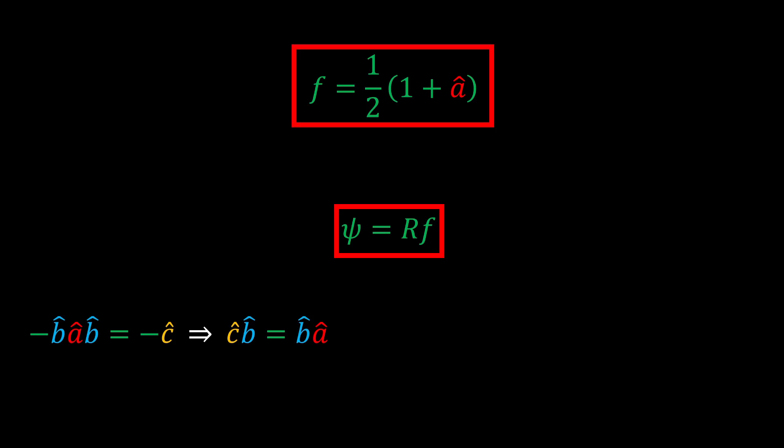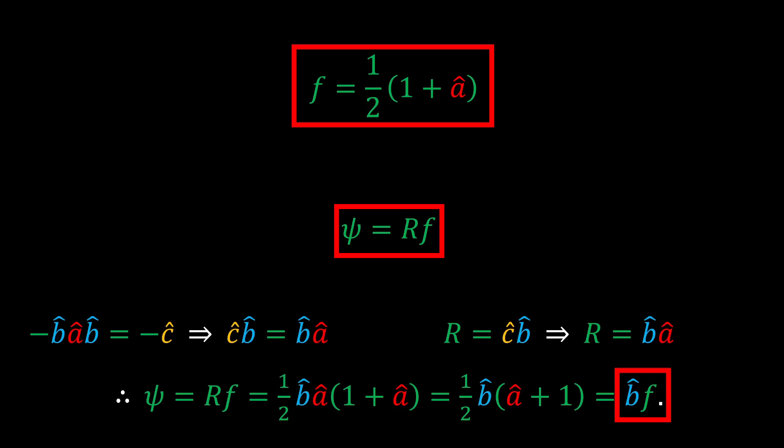It then follows that a Pauli spinner is the rotor R times this projector F. But things simplify even further. Remember that A reflected in the bisector B gives negative C, which implies CB equals BA. And R equals CB, so R also equals BA. Thus, by the Pacquilman property of projectors, that is, the property that a projector for a given spin axis absorbs that spin axis, the spinner simplifies to just the bisector B times F. The projector is essentially an algebraic trick and doesn't need to factor into the physical interpretation of the spinner. Due to this, the bisector B is, itself, the geometric object representing the Pauli spinner.